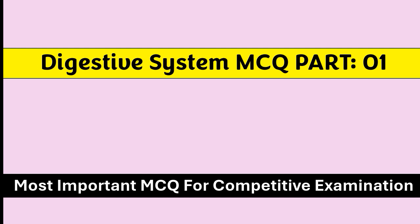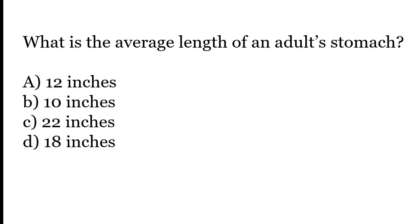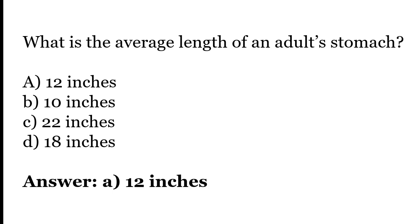What is the average length of an adult stomach? Options: 12 inches, 10 inches, 22 inches, 18 inches. The correct answer is option A — the average length of an adult stomach is about 12 inches.